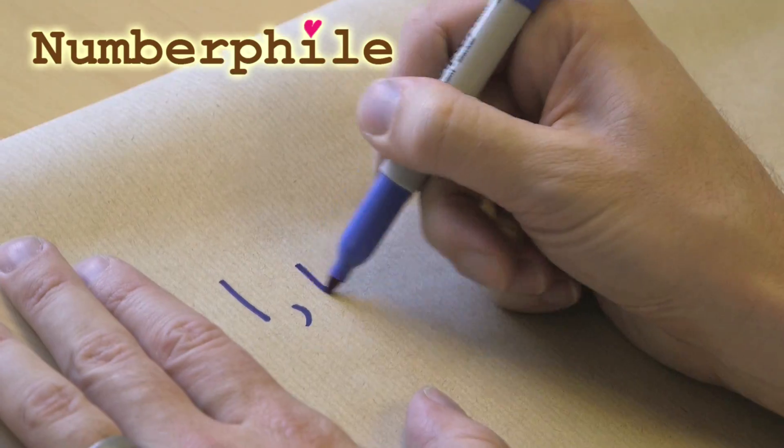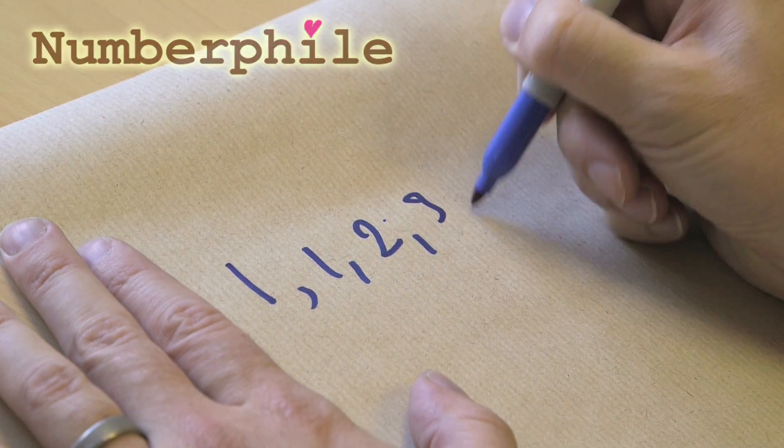Fibonacci numbers again, start 1, 1, 2, 3, 5.